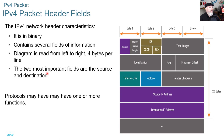The two most important fields are the source and destination addresses. The V4 header includes: version, total length, flags, fragment offset, time to live, protocol, header checksum, and source and destination IP addresses. Protocols may have one or more functions within the header.